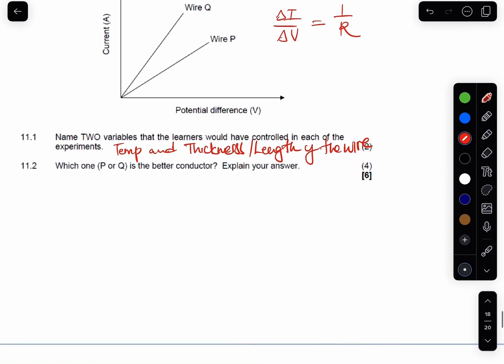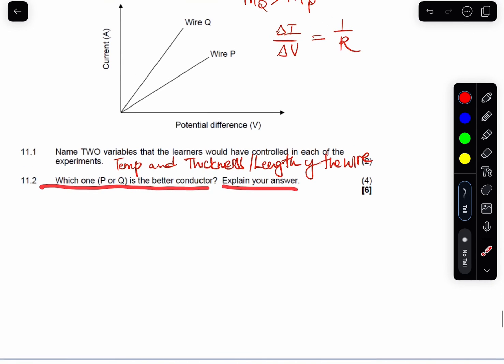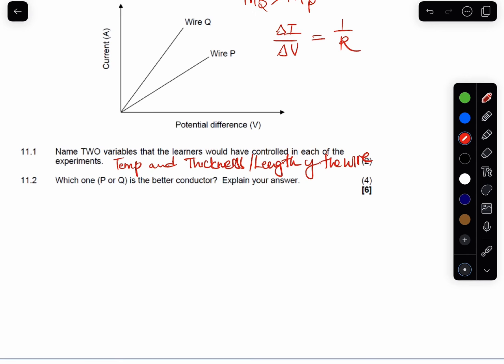Now it says here, it says in this question, which one, P or Q, is a better conductor? Right, which one is a better conductor? So guys, what we need to check here in terms of better conductivity. If you look at the graph, guys, if you look at the graph, let's say we take this potential difference. Let's say that value is 4.